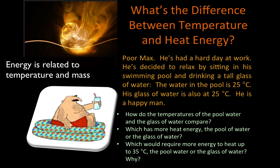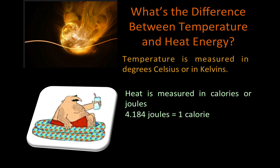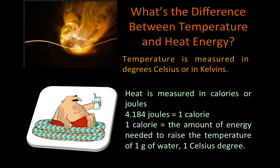Energy is related to both temperature and mass — it has to do with the speed of particles and how many particles are moving. While temperature is measured in degrees Celsius or Kelvin, heat is measured in calories or joules. There are 4.184 joules in one calorie. A calorie is defined as the amount of energy needed to raise the temperature of one gram of water one Celsius degree.